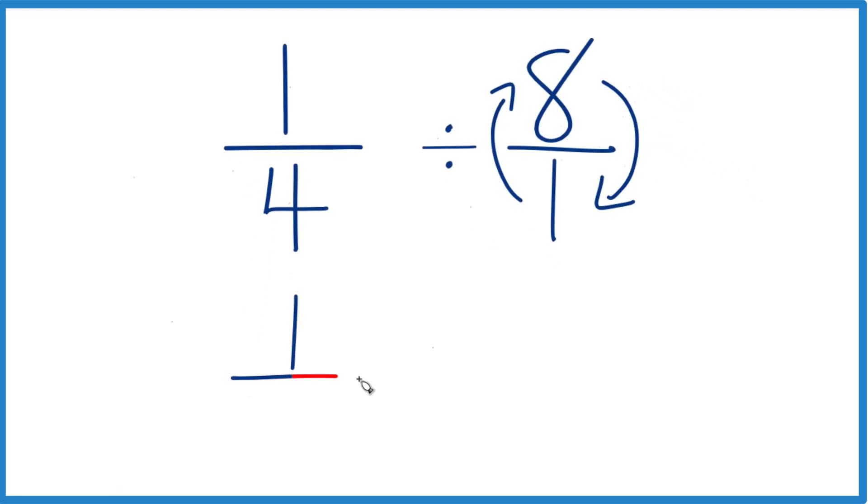Now I can take 1/4, and instead of division, I'm going to multiply by the reciprocal. So we have 1 over 8. That's just 1/8.